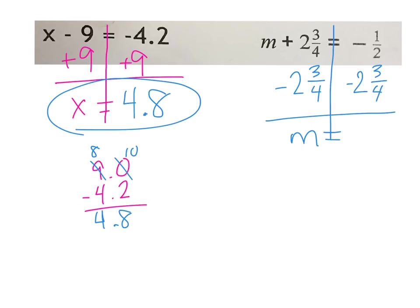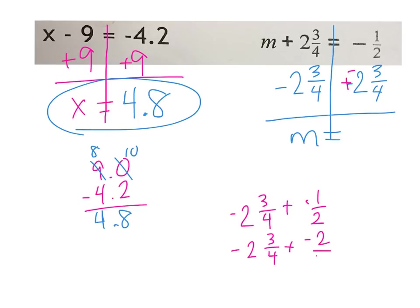Now I need to solve the other side: negative 1 half minus 2 and 3 fourths. This is a keep, change, change situation — so really I have a negative plus a negative. Same signs, add and keep. I'll do that work down here: 2 and 3 fourths plus 1 half. I want to give them common denominators, so negative 2 and 3 fourths plus negative 2 fourths.